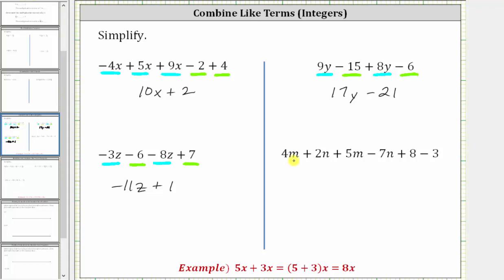For the last expression, we have four m plus two n plus five m minus seven n plus eight minus three. Four m and five m are like terms because they both contain one factor of m. Two n and negative seven n are like terms because both terms contain one factor of n, and eight and negative three are also like terms. Since four plus five is nine, four m plus five m is nine m.